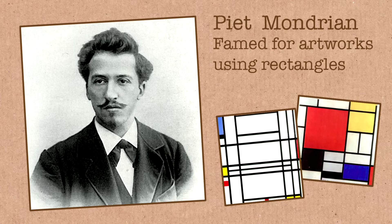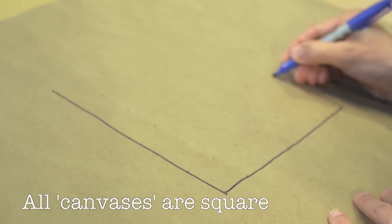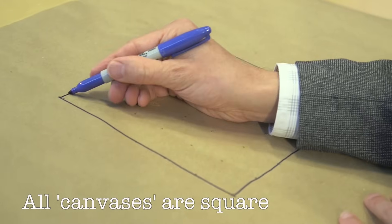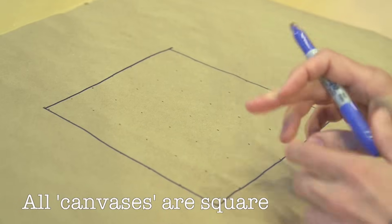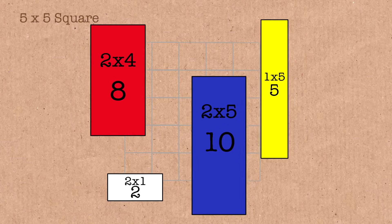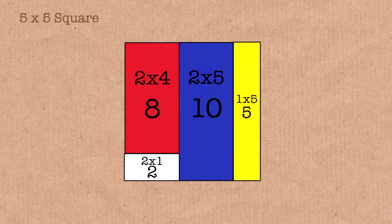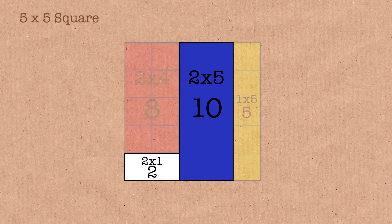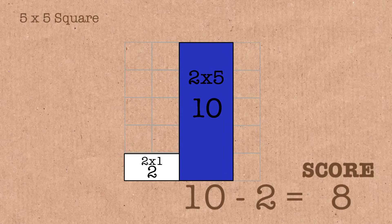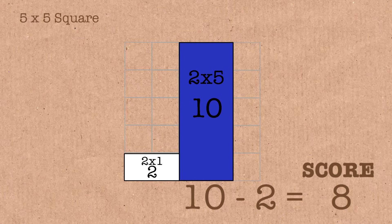You're going to say, okay, I'm going to score each of your pieces of art. We're going to insist that all of the rectangles have got different dimensions and your score is going to be equal to your largest area of rectangle minus your smallest area of rectangle. Your smallest score possible is what you want to go for. The other condition is that you have to tile the whole canvas.